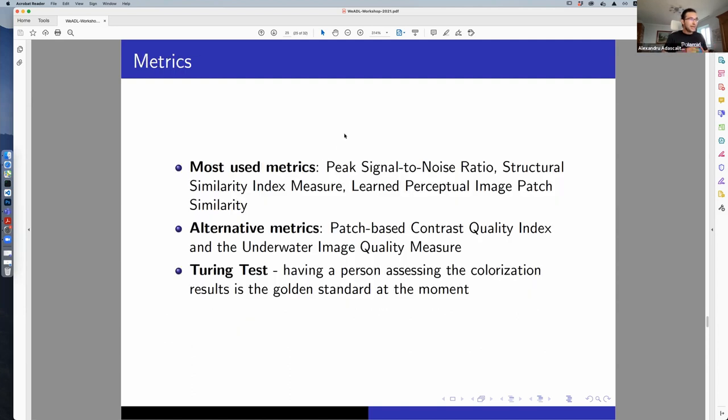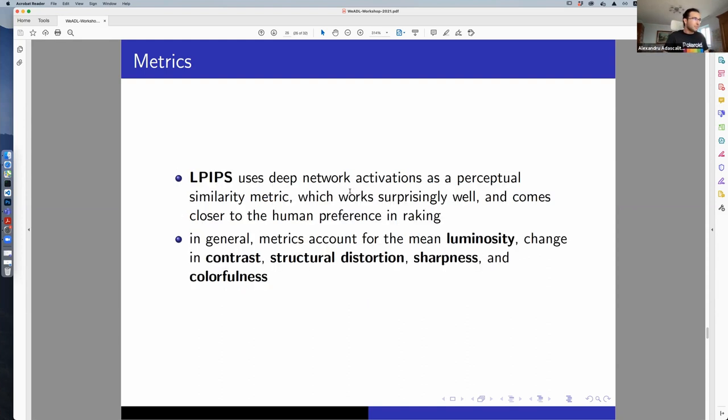In terms of metrics, there are some metrics really specific to this task. The Peak Signal to Noise Ratio, the Structural Similarity Index Measure, and the Learned Perceptual Image Patch Similarity. Something that is more appealing to us is the Turing test, where you ask a human, do you think that this image came out of a colorization model, or it was taken by a camera?